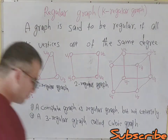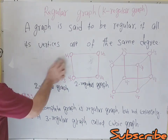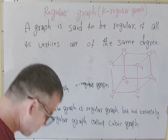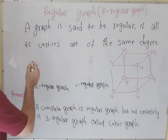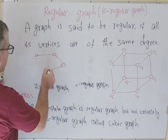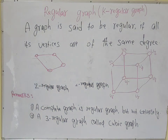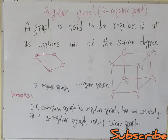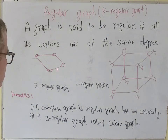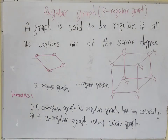Look at this example. This is a regular graph because every vertex of this graph has degree two. But according to the definition of a complete graph, we cannot say it is a complete graph.